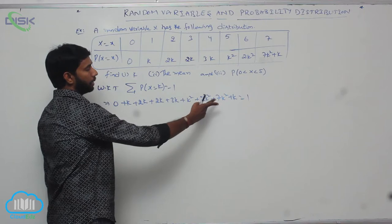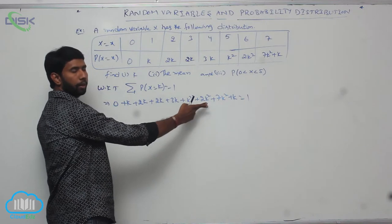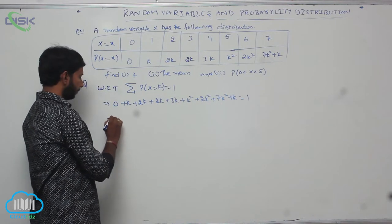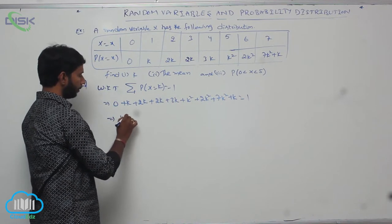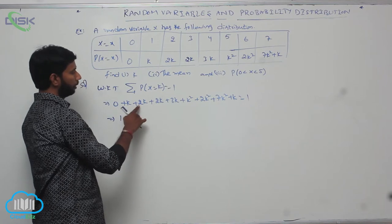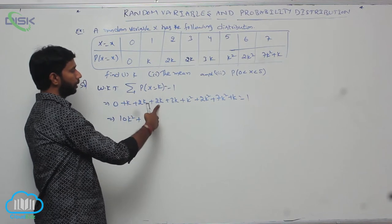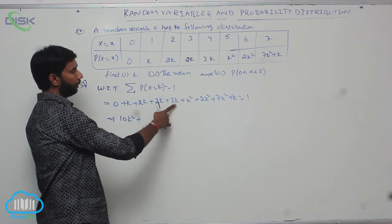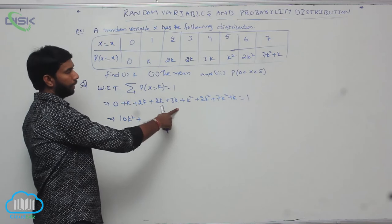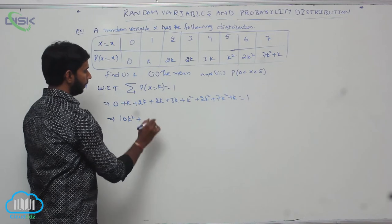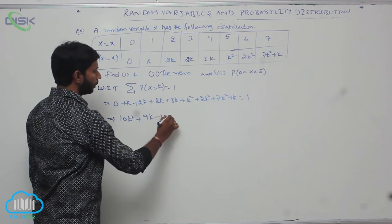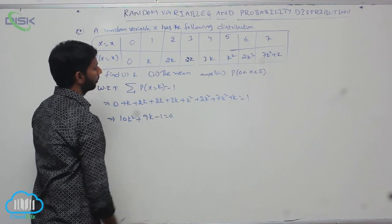Simplifying: 7k squared plus 2k squared gives 9k squared, plus k squared gives 10k squared. For the k terms: 3k plus 2k is 5k, plus 3k is 8k, plus k is 9k. So we get 10k squared plus 9k minus 1 is equal to 0.